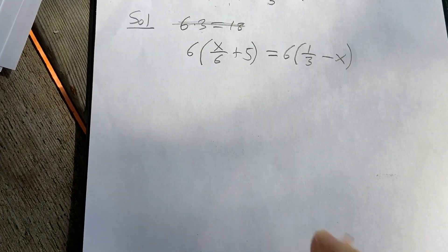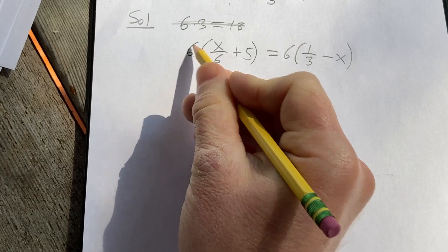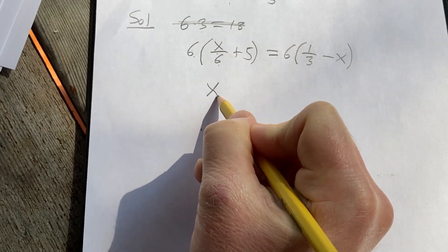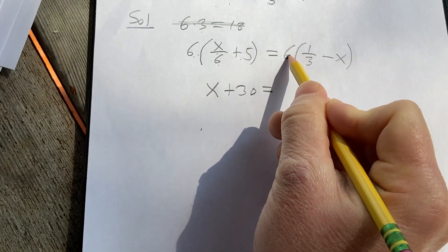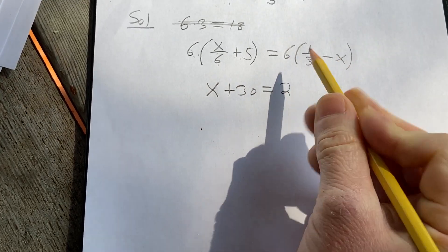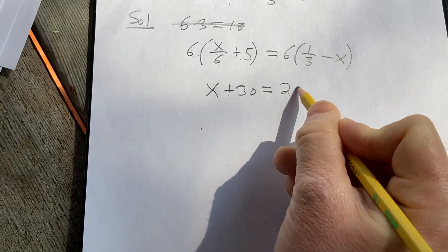And now you can distribute. So 6 times this, well, the 6's will cancel. We're just left with x. 6 times 5 is going to give us 30. 6 times 1 third is going to give us 2. 6 times minus x is minus 6x.